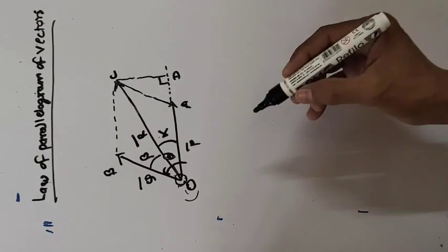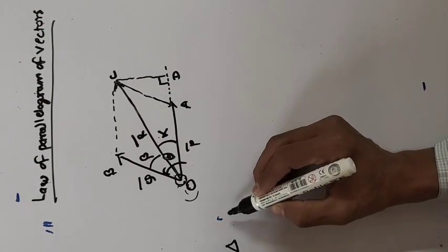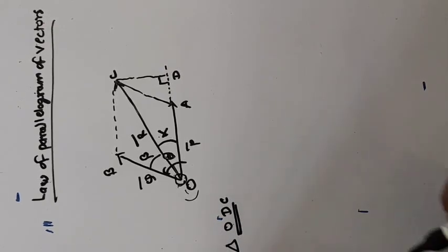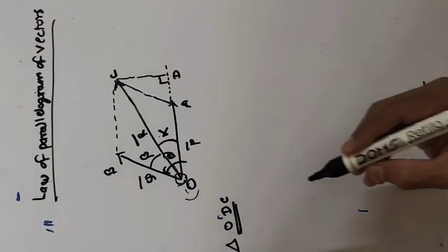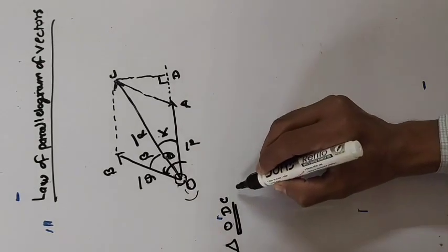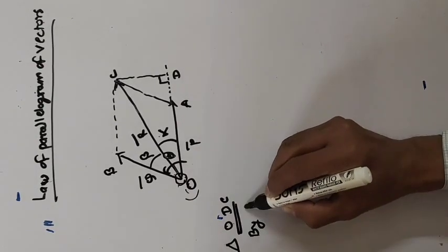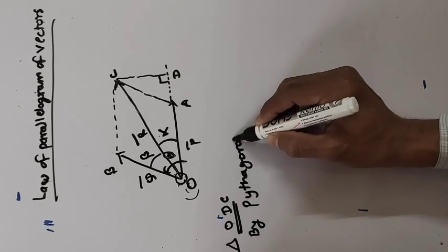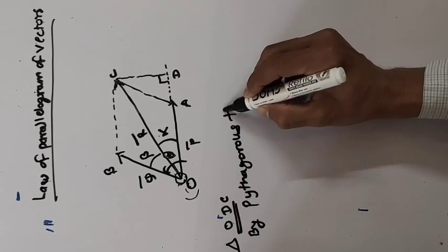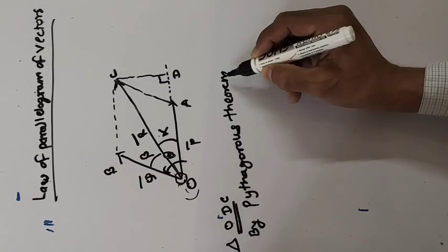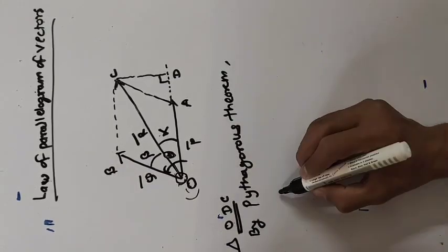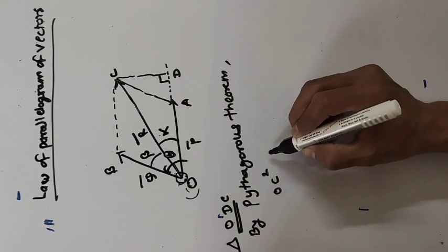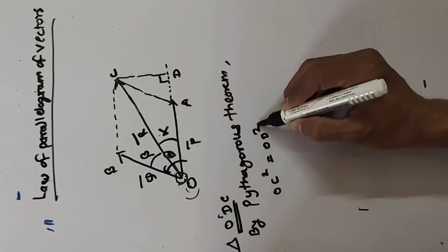In right-angle triangle ODC, we apply the Pythagoras theorem: OC² = OD² + CD².